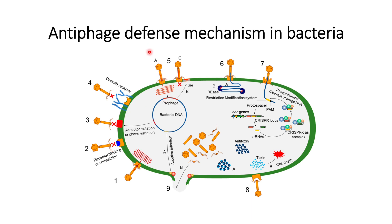The next condition is that when the bacteriophage injects its genomic DNA inside the bacterial cells, it triggers the formation of a prophage. This prophage will then modify the sites in such a way that the bacteriophage will not be able to inject its DNA any further.